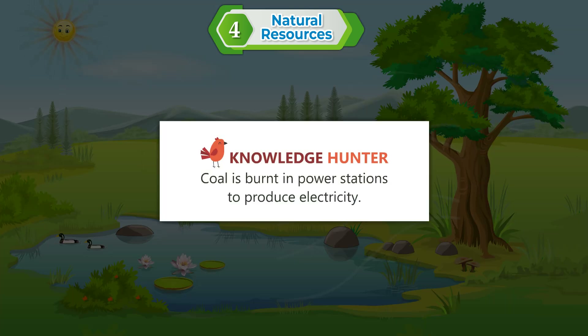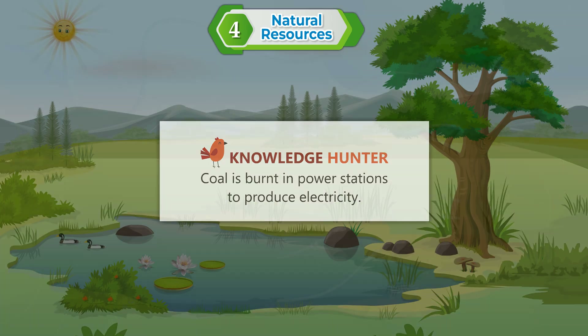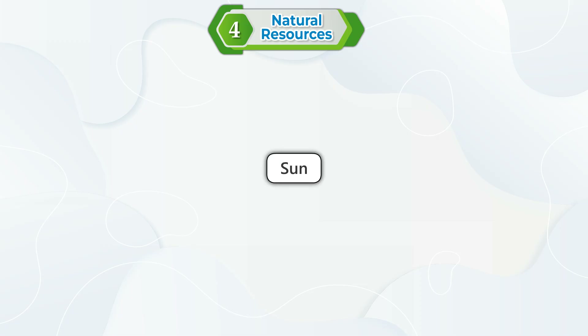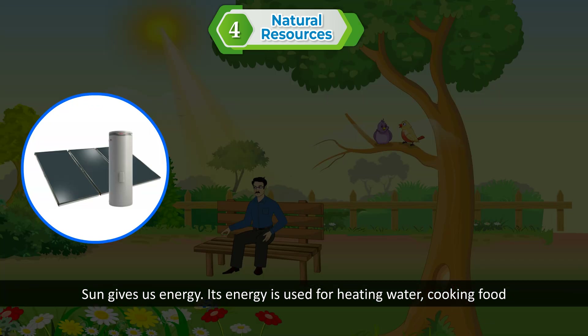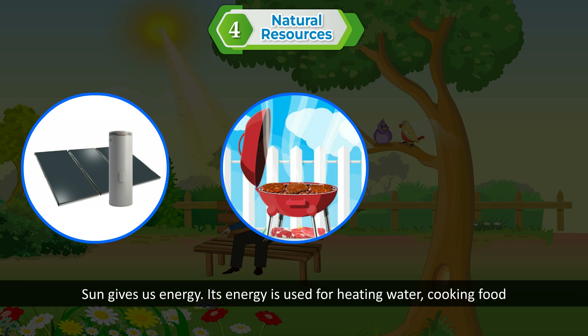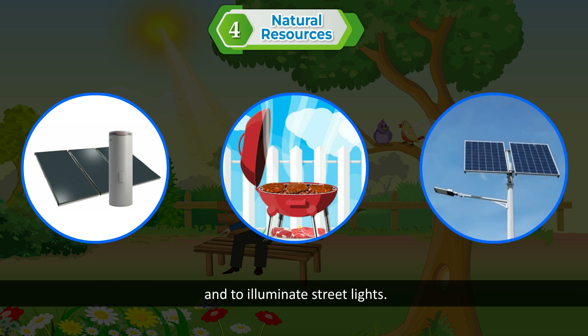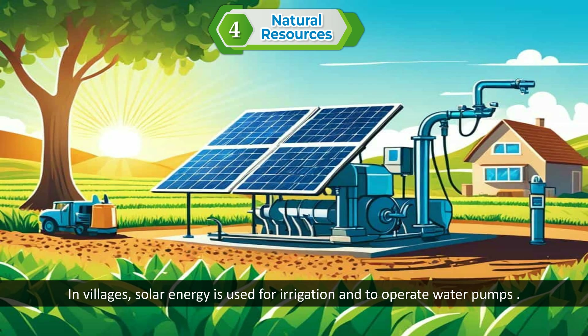Knowledge Hunter: Coal is burnt in power stations to produce electricity. Sun gives us energy. Its energy is used for heating water, cooking food, and to illuminate street lights. In villages, solar energy is used for irrigation and to operate water pumps.